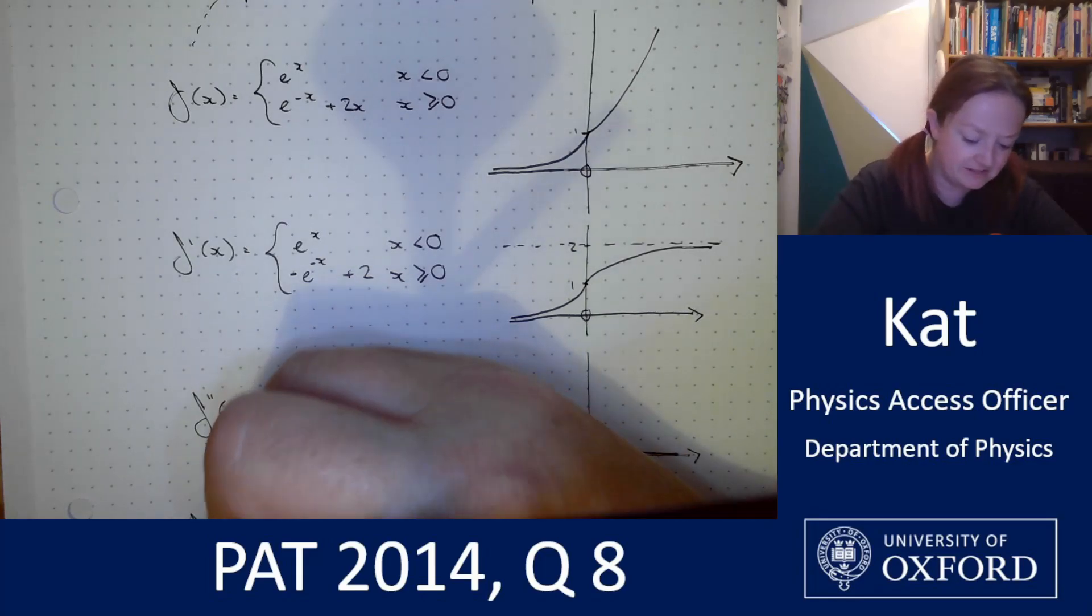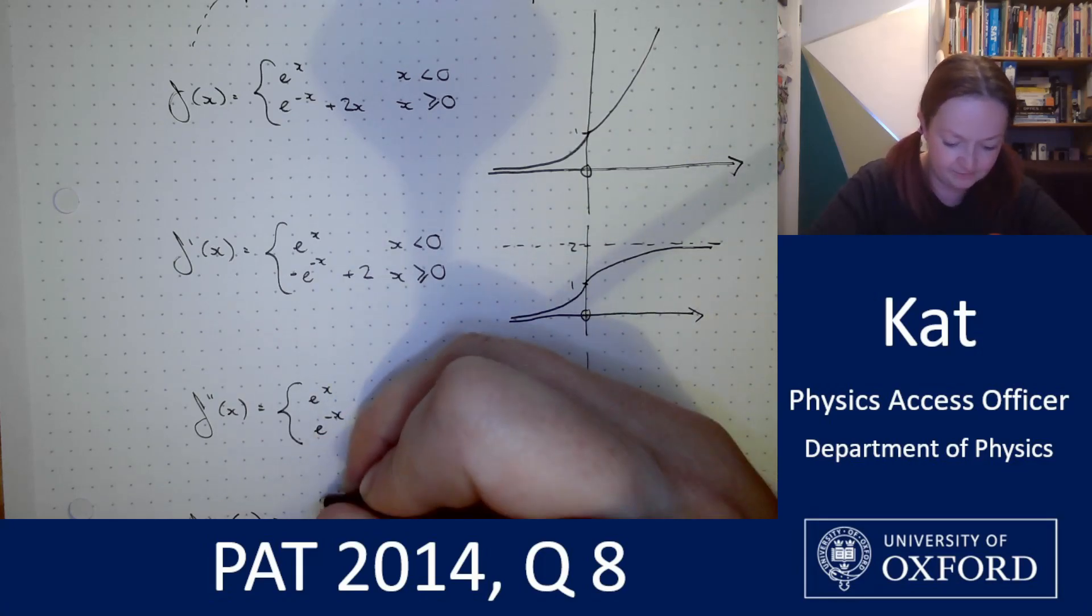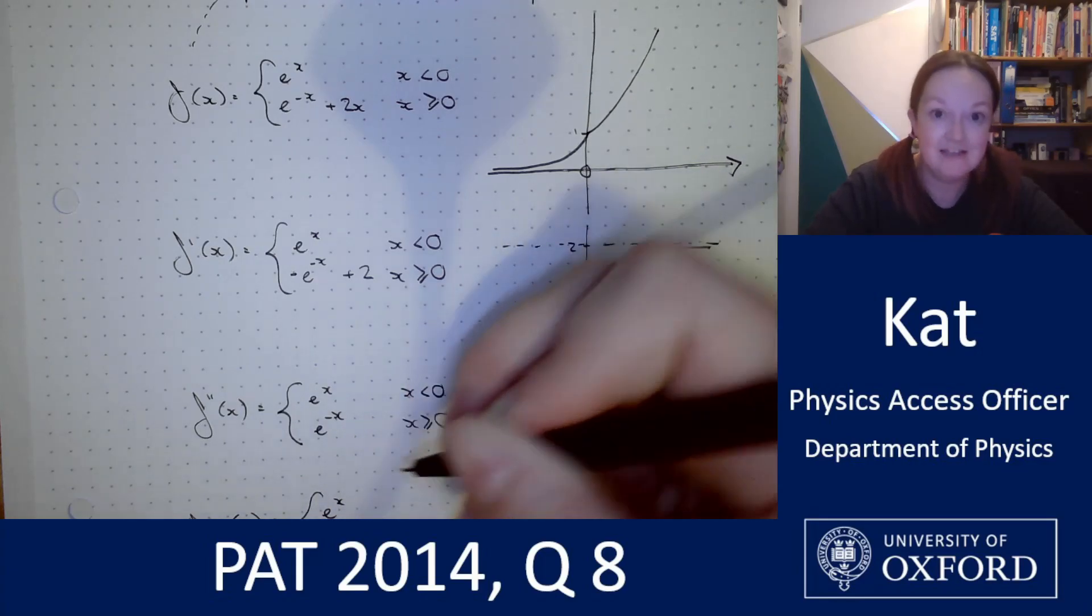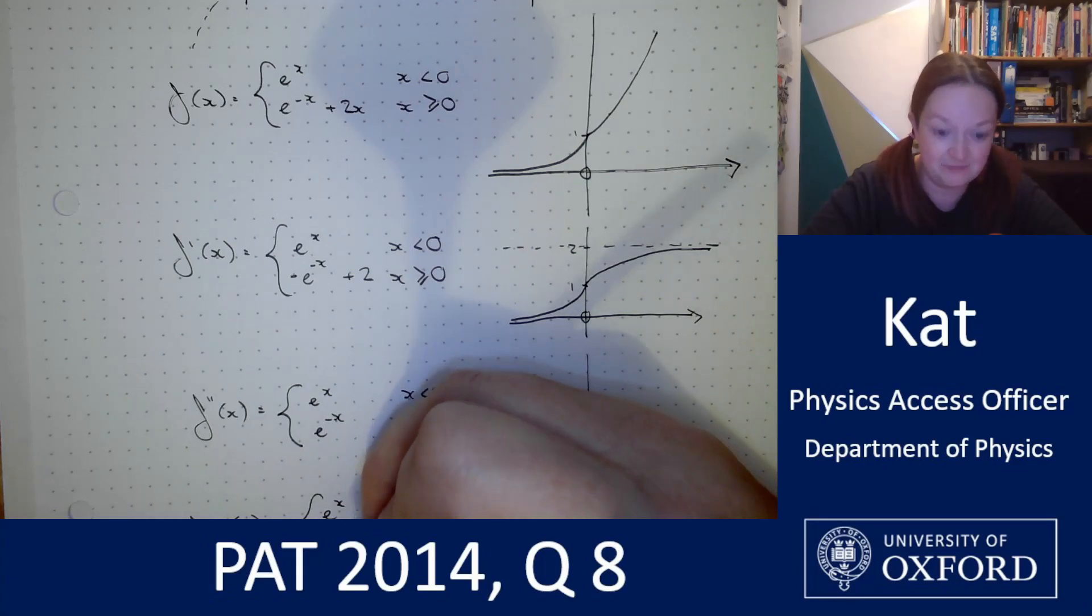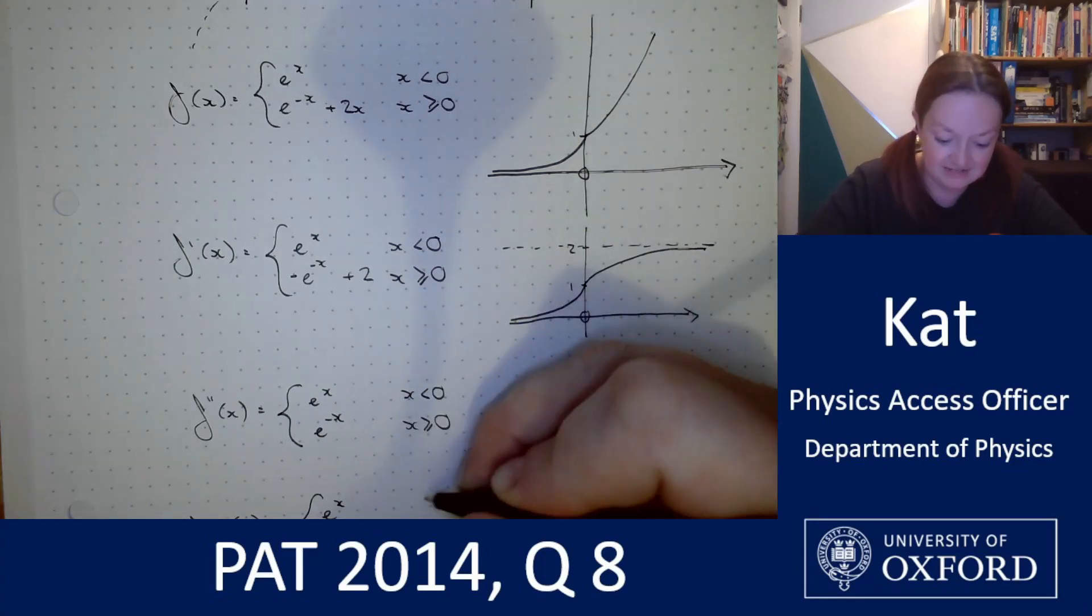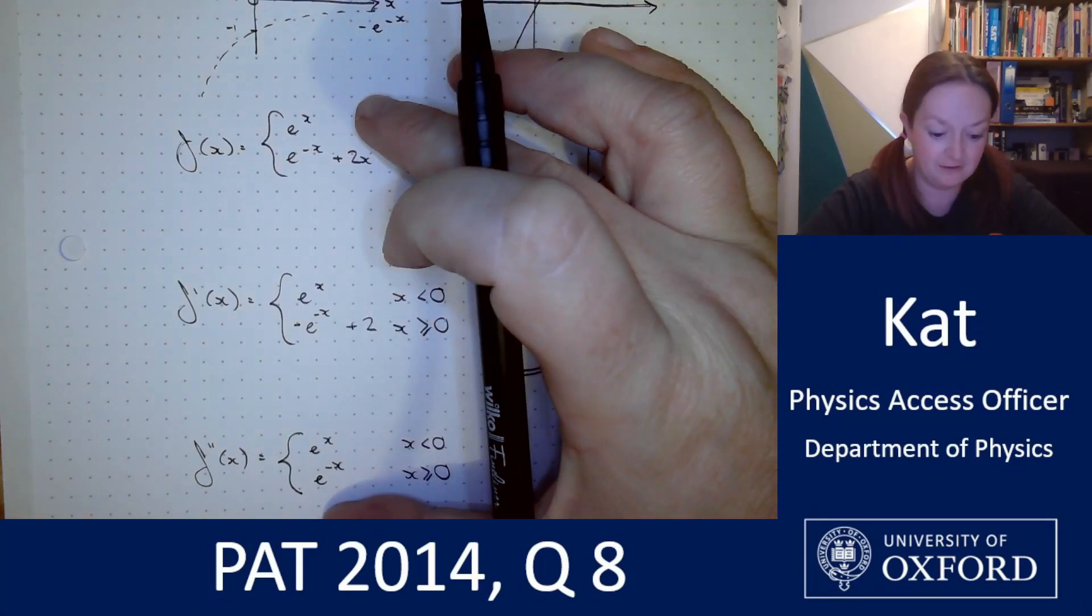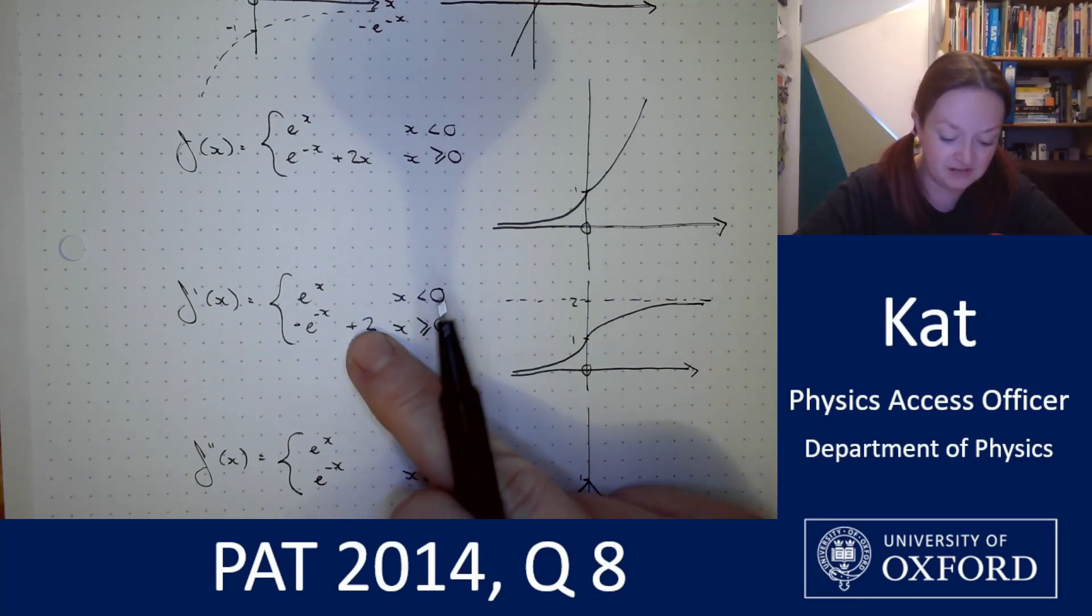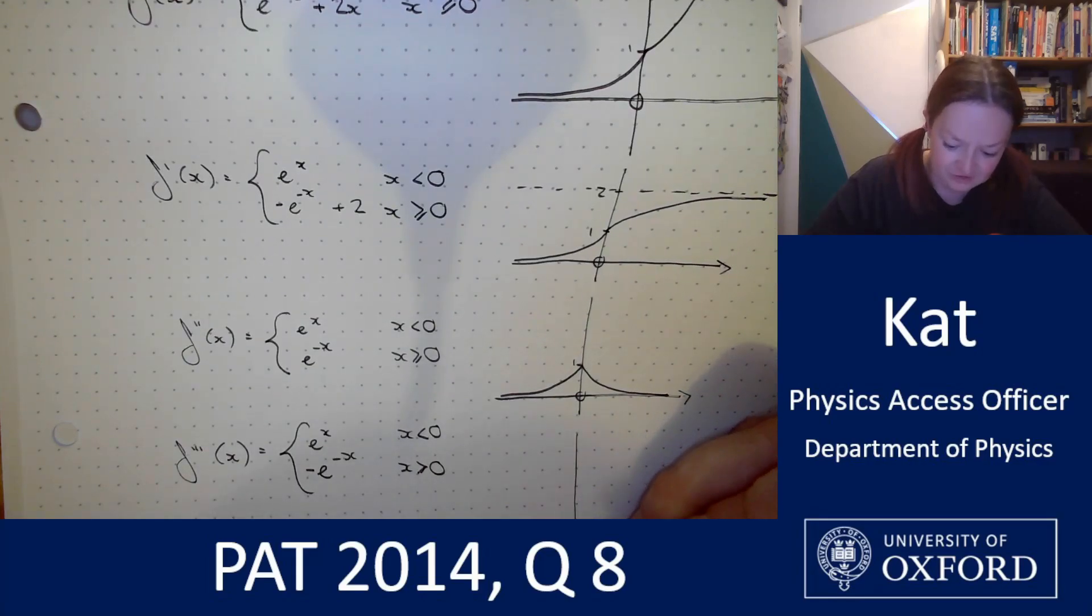And last but by no means least, we want the third derivative f triple dashed x. Unsurprisingly, e to the x still differentiates to e to the x. e to the negative x goes to negative e to the negative x. The curve that we last saw up at the start, where we were shifting it up by two. But this time, we are not shifting it. So final sketch of the question.